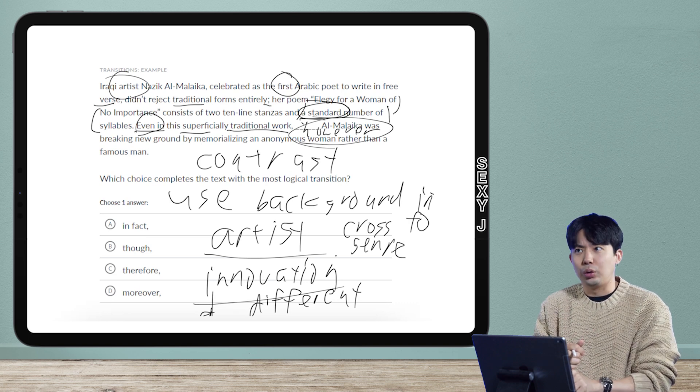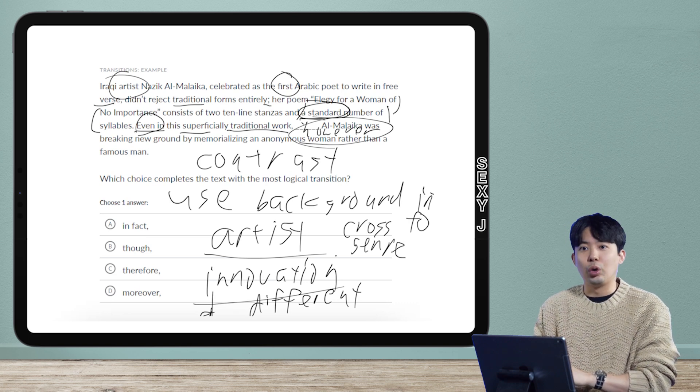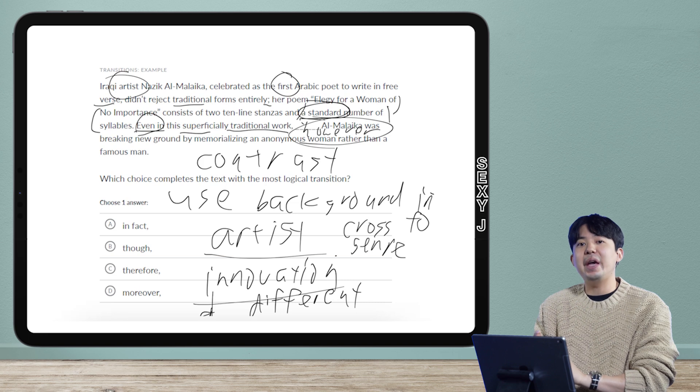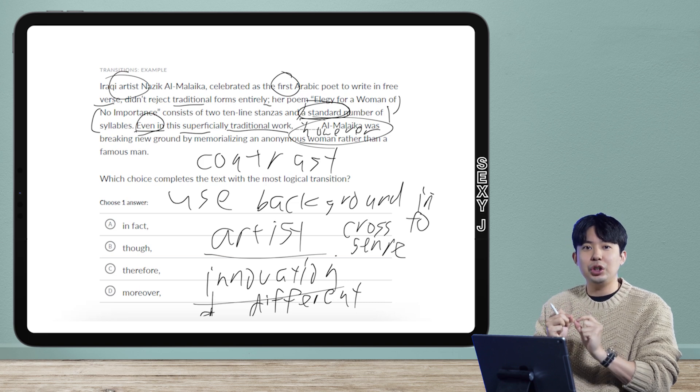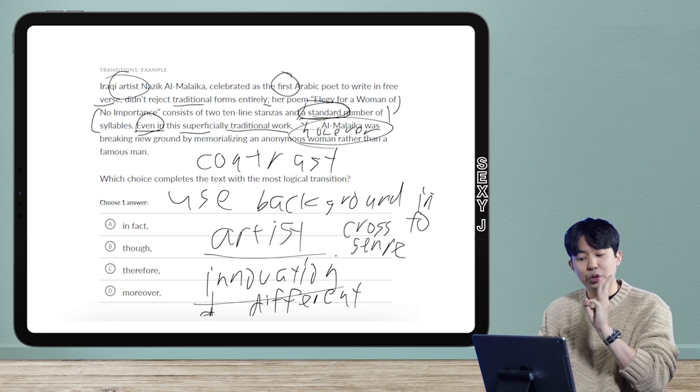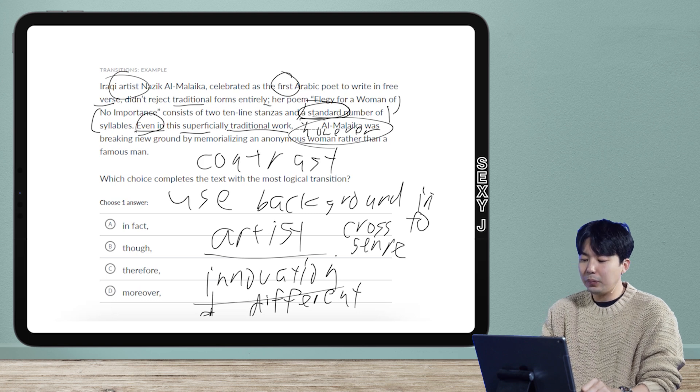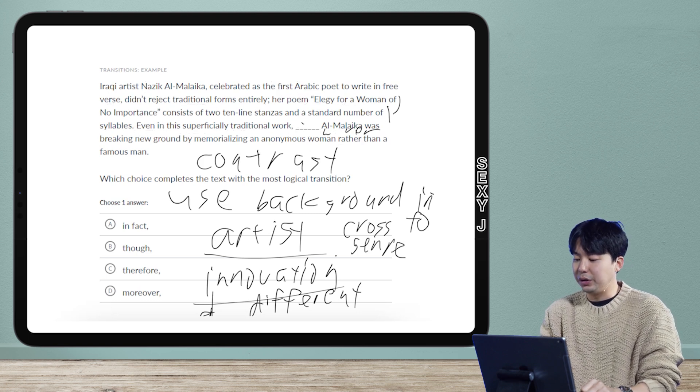If I have phrasing like superficially traditional or ostensibly something or apparently something or it may appear like this, I'm always going to contrast it later. I have three ways to know this is going to be contrast.